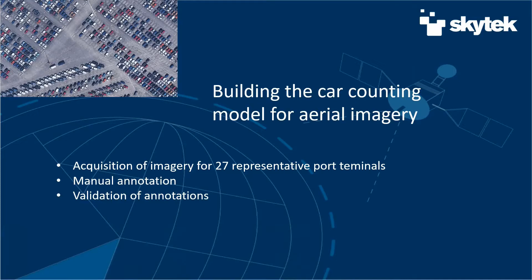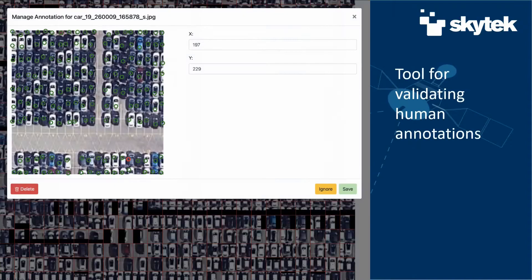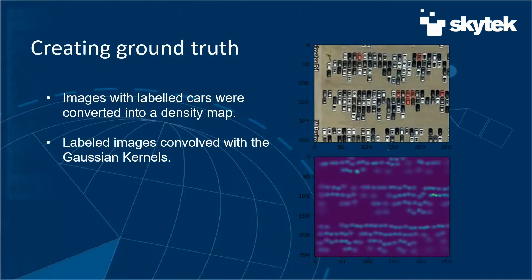In the first stage of our work, we decided to build a car counting model for high-resolution aerial imagery. We acquired imagery for 27 representative port terminals, performed manual annotation on a subsample of images, and conducted validation of those annotations as an additional QA step. We also built a tool for validating human annotations. Then we converted the labeled images into density maps.